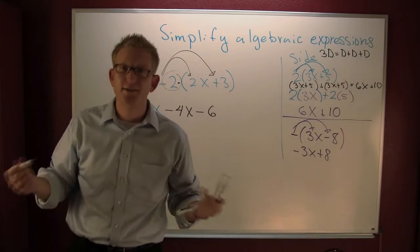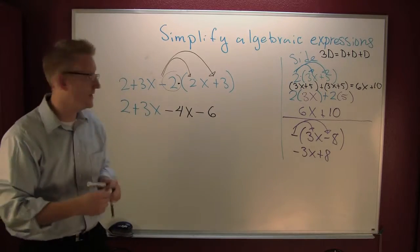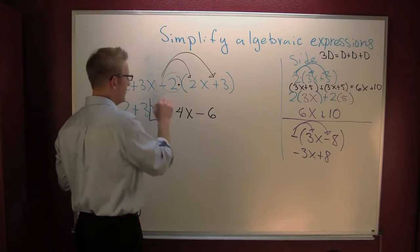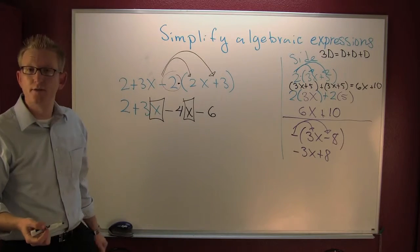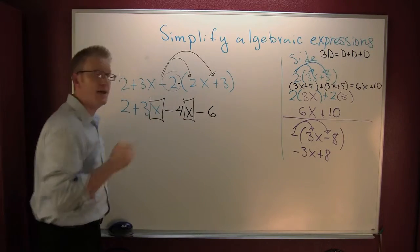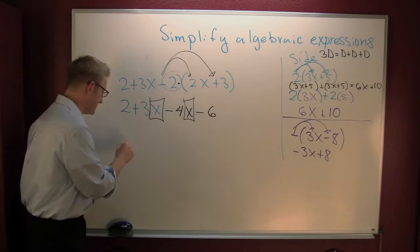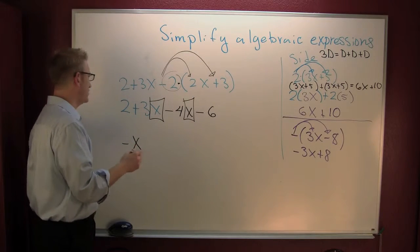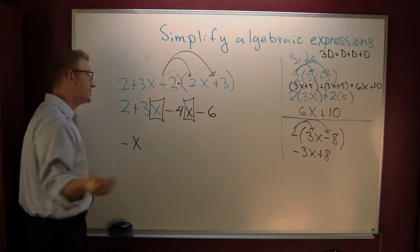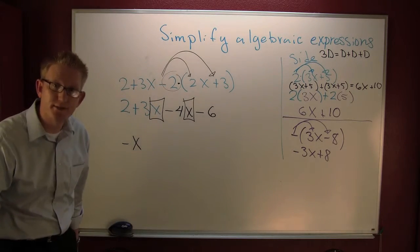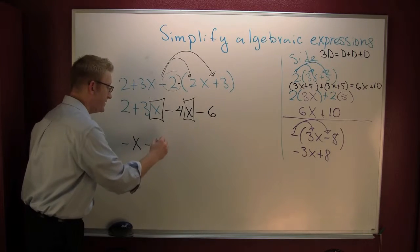So now, do I have any like terms? Yeah, I've got some x's. If I had 3x's and somebody took 4, I'd have minus x. And if I had 2 plus a minus 6 — those have opposite signs — so I subtract and associate the sign of the bigger one. This is going to be minus 4.